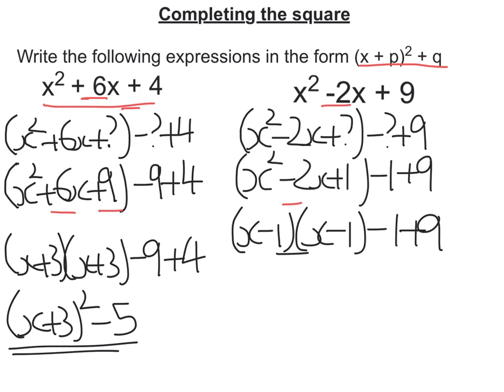Then we look to simplify. So the first bit becomes x minus 1 all squared and minus 1 plus 9 is plus 8.